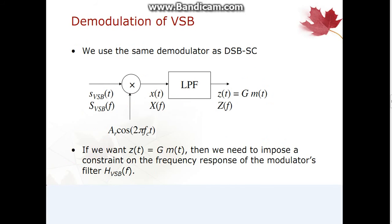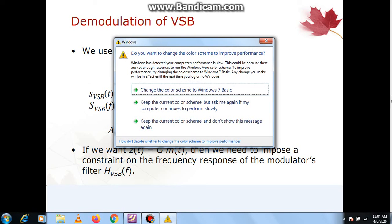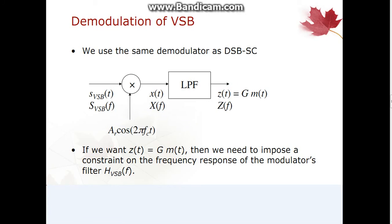Now after generating the VSB-SC signal at the transmitter side, it is required to transmit over the wireless communication channel. After transmitting the VSB-SC signal from the transmitter, this signal is able to be decoded at the receiver end with the help of the demodulation process.